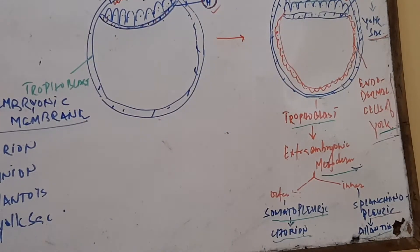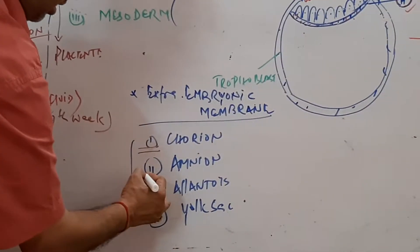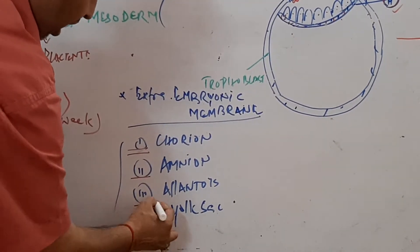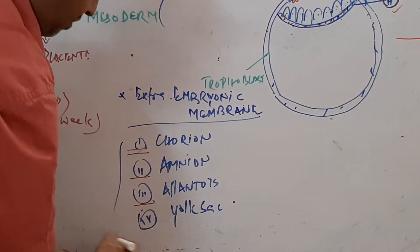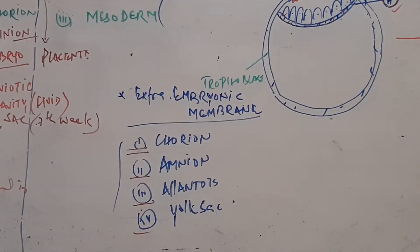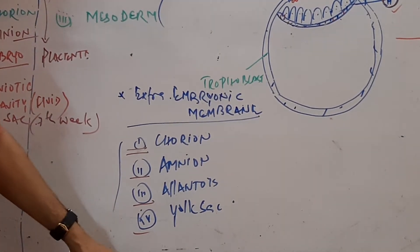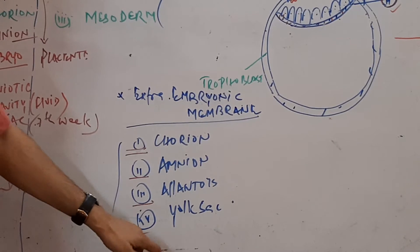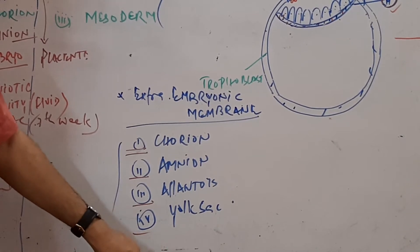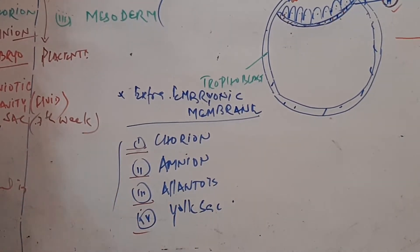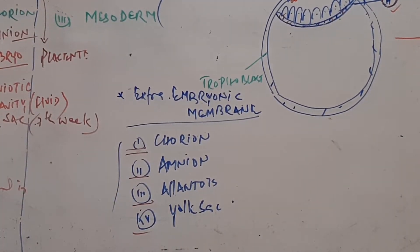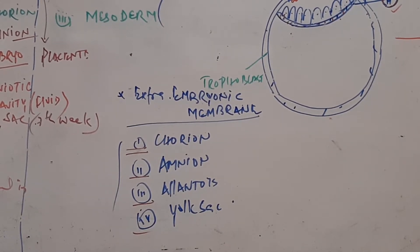So you can see the layers which produce the extra-embryonic membranes. Here are the extra-embryonic membranes: first is chorion, second is amnion, third is allantois, and fourth is the yolk sac, which degenerates at 7 to 8 weeks because development of the placenta takes place.